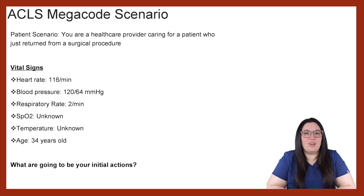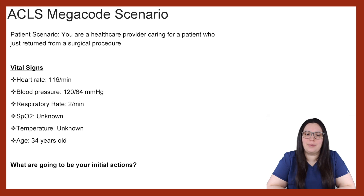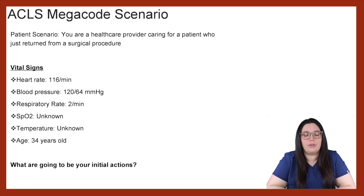If you haven't done so already, you're going to connect this patient to the monitor. When you connect them, you're going to see that the heart rate is 116 per minute, the blood pressure is 120 over 60, respiratory rate is two per minute, the SpO2 is unknown, the temperature is also unknown, and the patient is 34.